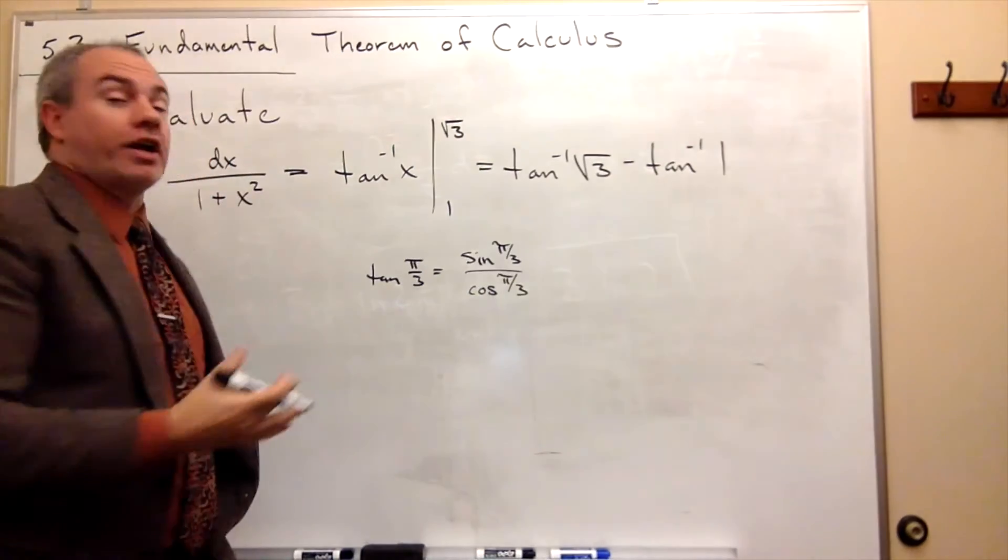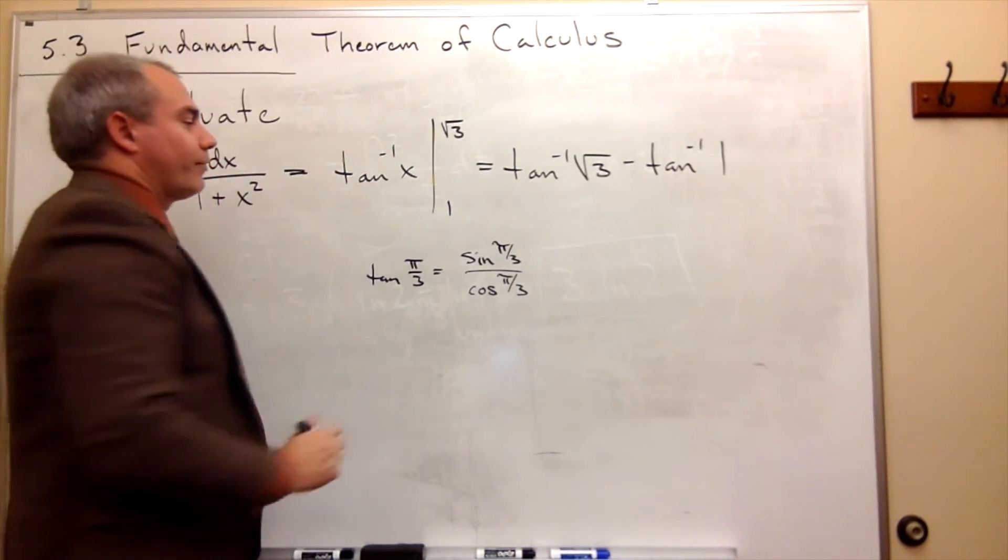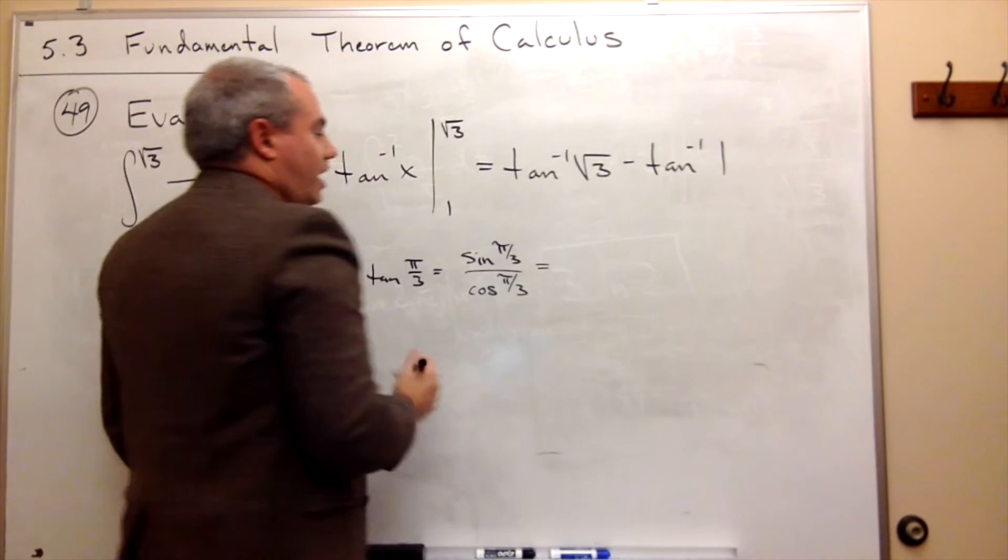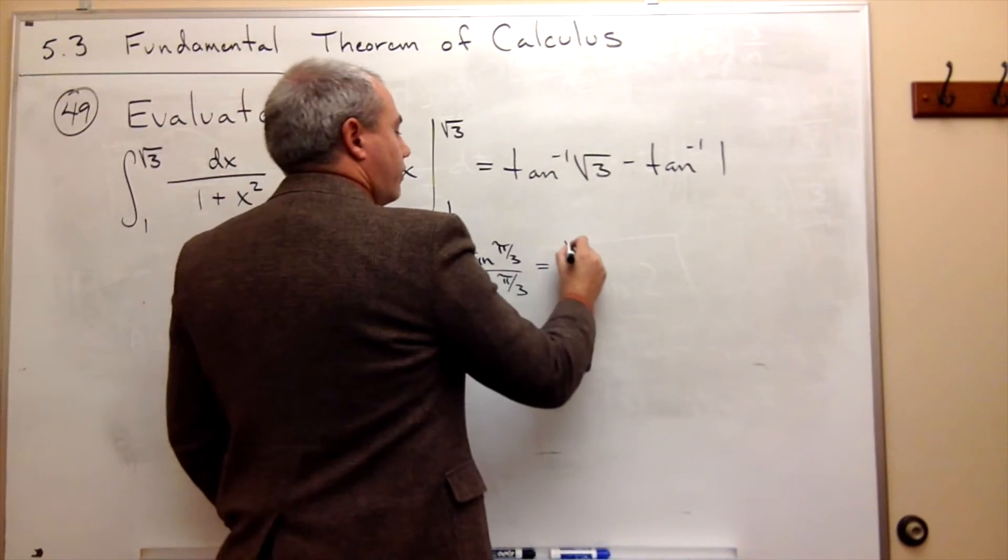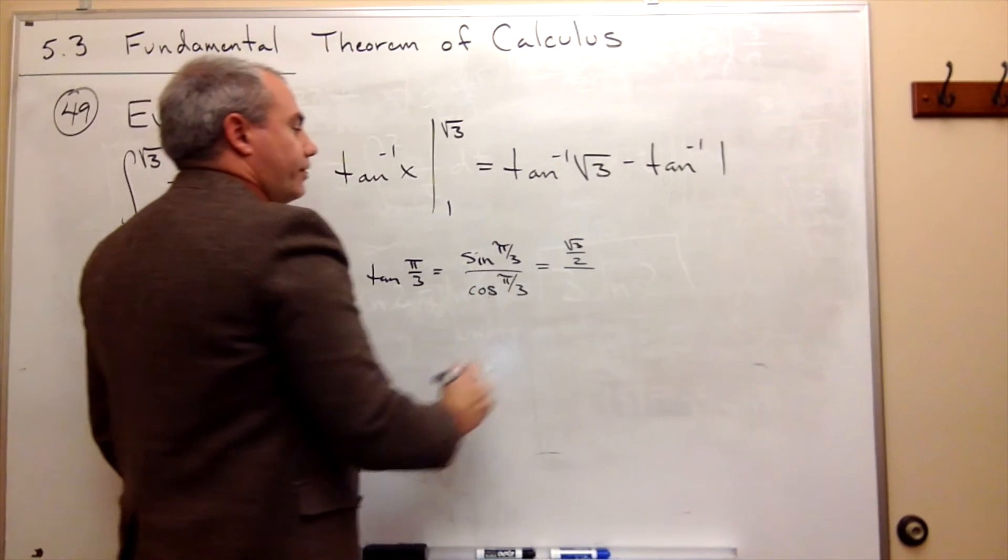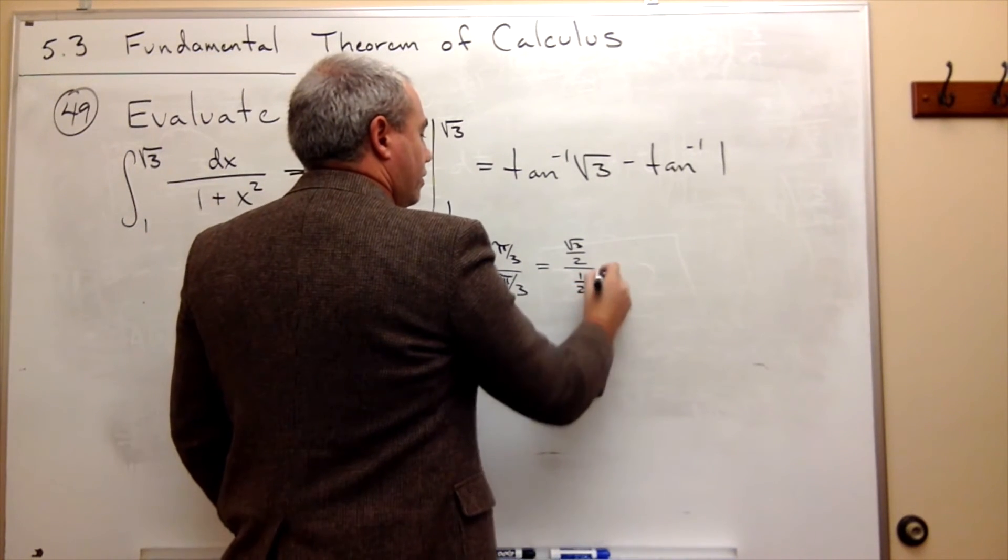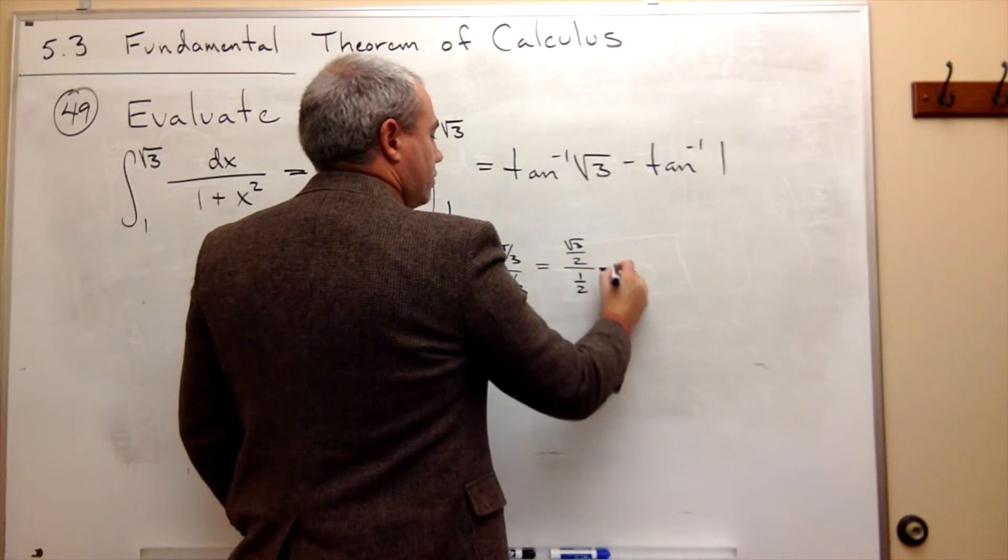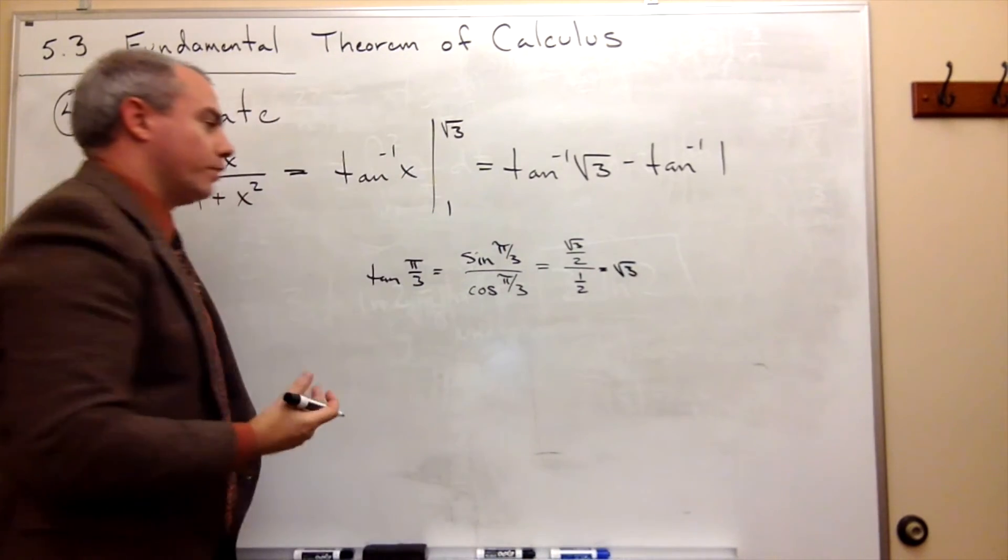If we're just trying to do this in our head, obviously we could consult a table if we wanted to. Sine of pi over 3 is root 3 over 2, and cosine of pi over 3 is 1 half, which is square root 3, which is perfect.